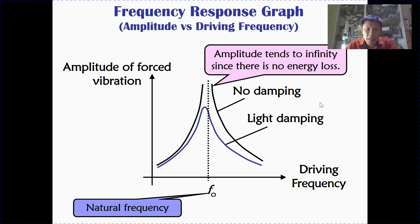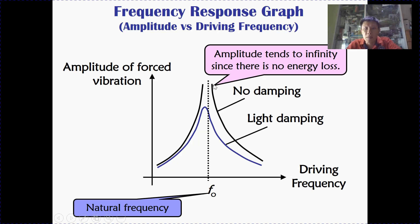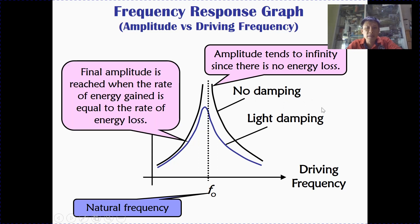In the case of no damping, the amplitude will tend to infinity, because there is no energy loss and there is a constant input of energy — so in theory, the amplitude must go to infinity. When there is damping, it will not go to infinity, because the final amplitude is reached when the rate of energy gain equals the rate of energy loss.